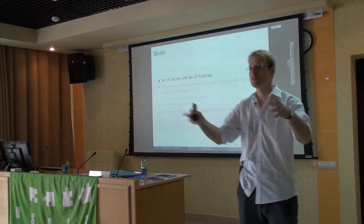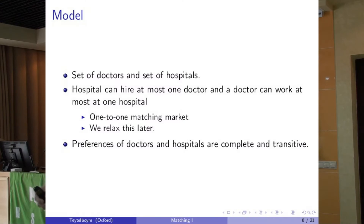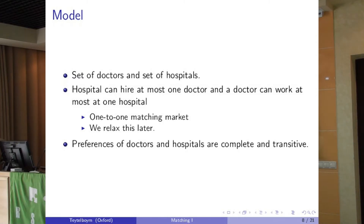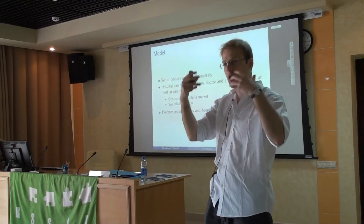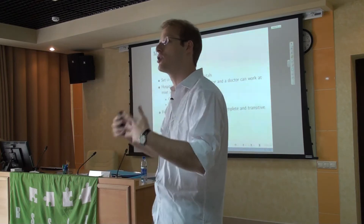Here's the model. It's a set of doctors and hospitals - some on each side. To keep it very simple, a hospital can hire at most one doctor, and a doctor can work at most at one hospital. This is what we call a one-to-one matching market. You take one doctor, match them to one hospital, and one hospital gets matched to one doctor. You might be unmatched - you might say, I don't want to work in any hospital, I'm going to study economics instead. Doctors have preferences over all hospitals - nice, complete, transitive preferences.